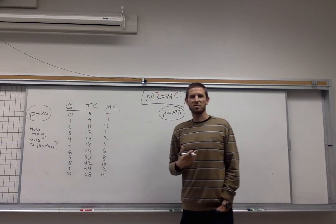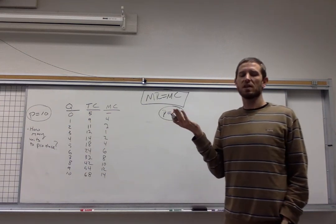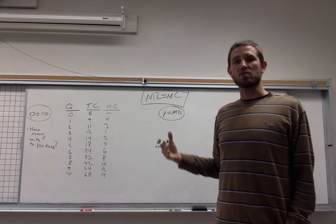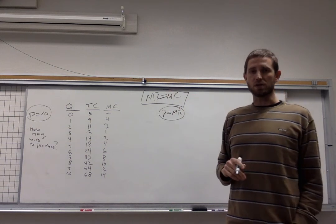Every time these firms sell one more unit, their total revenue is going to increase by whatever the price is. You sell one more unit for ten bucks, it's going to cause the total revenue to increase by ten bucks. So that's why price equals marginal revenue.